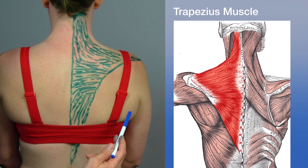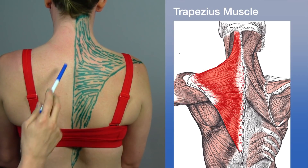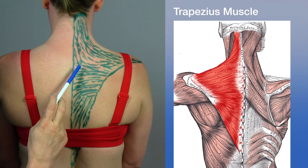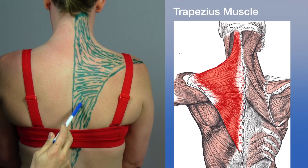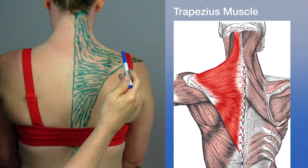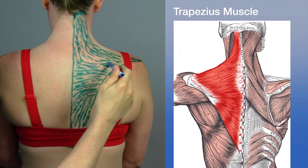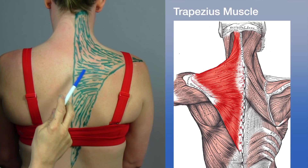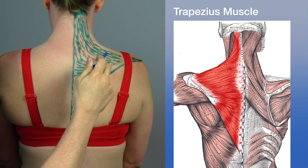The next muscle is the trapezius, a large, important diamond-shaped muscle. Its origin is on the occiput, nuchal line, and spinous processes of the cervical and thoracic spine all the way to T12. It inserts on the lateral third of the clavicle and acromion for the upper fibers, and on the scapular spine for the middle fibers. The orientation of these fibers varies greatly — some are inferior-lateral, others superior-lateral.